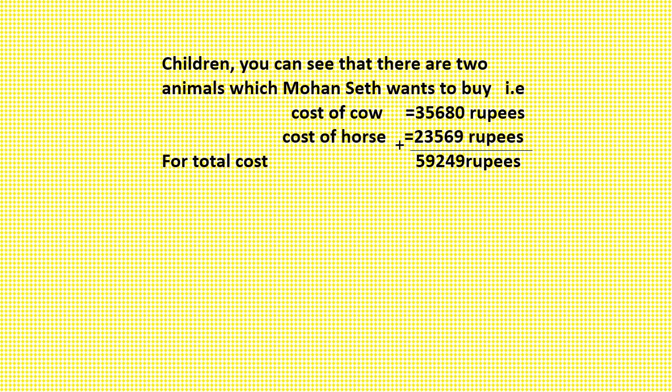Think — how? Look, you can see that there are two animals which Mohan Seth wants to buy: a cow costing 35,680 rupees and a horse costing 23,569 rupees. That means he has to spend 59,249 rupees to buy both the animals.